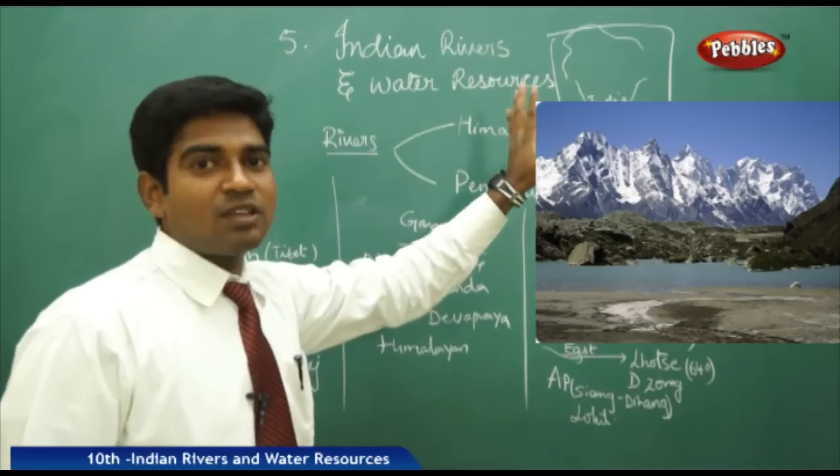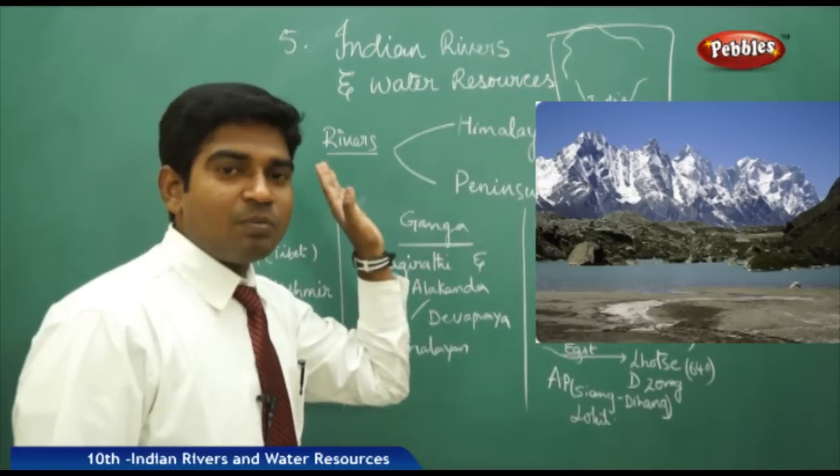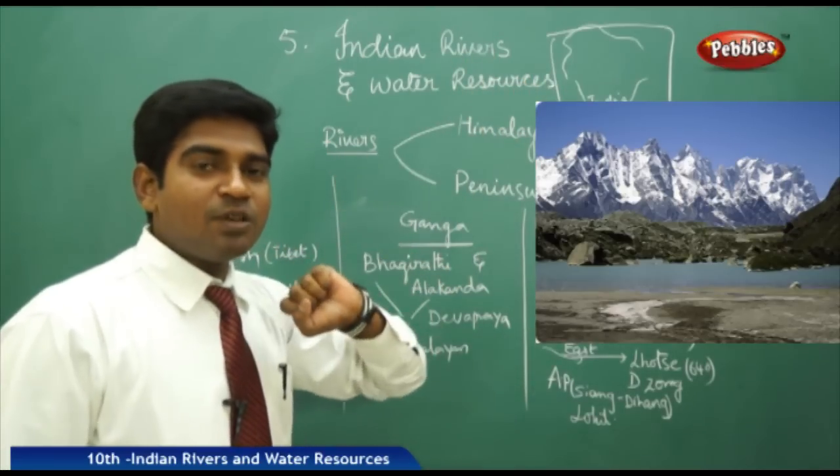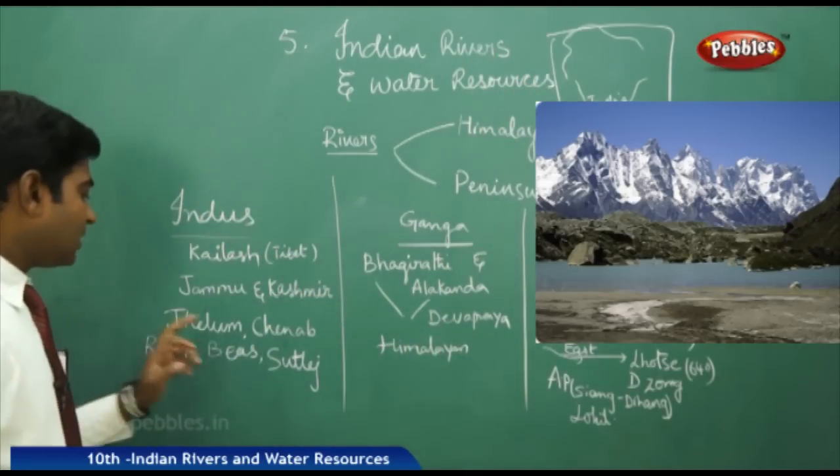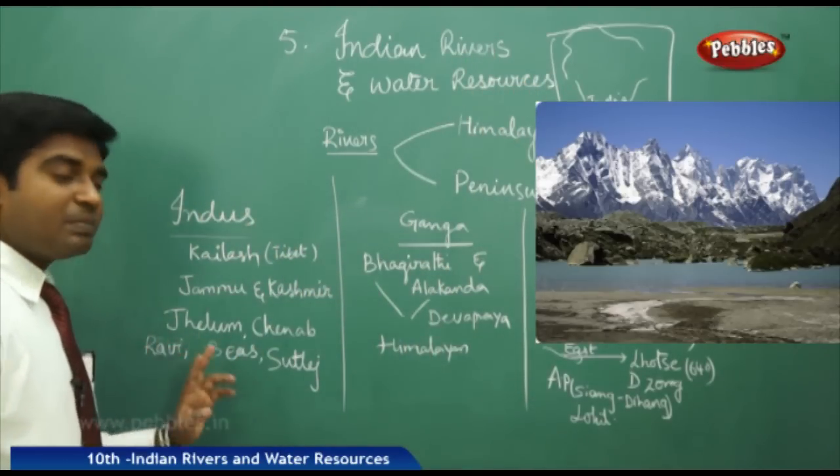The Indus has five tributaries, of which about 80% flows within India and 20% flows into Pakistan. The five major tributaries of the Indus are: Jhelum, Chenab, Ravi, Beas, and Sutlej.